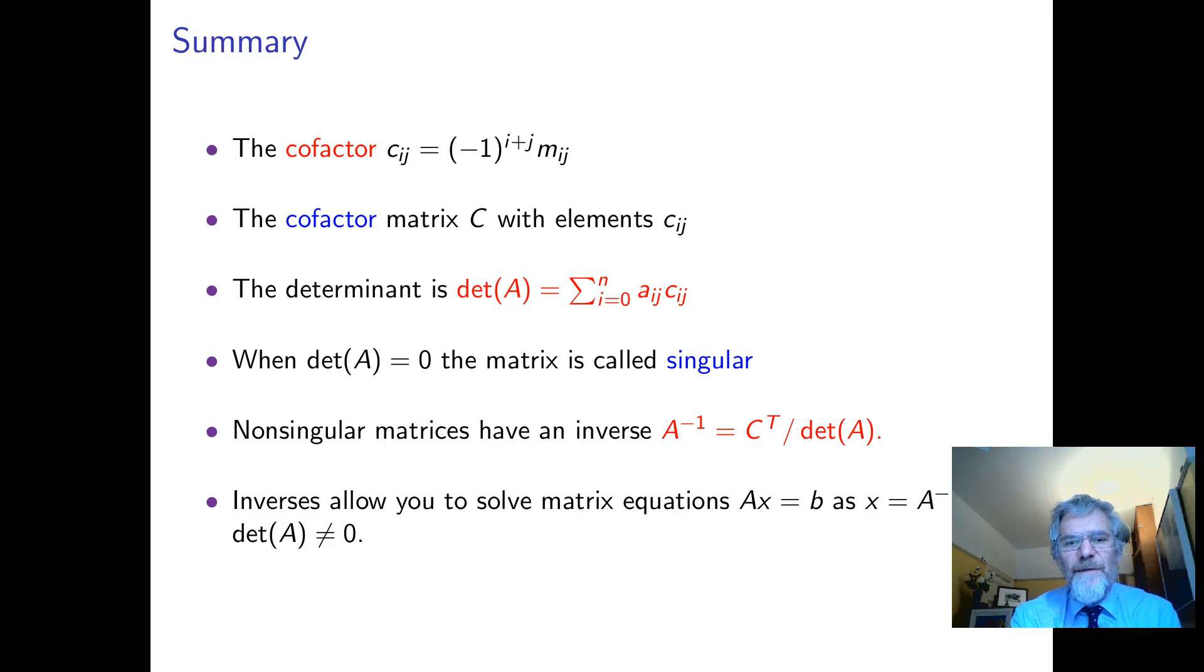We get a determinant by summing along any row or any column, the elements of that row and column times the cofactors that you formed from deleting them. If determinant is 0 the matrix is singular and then you can't invert it, it has no inverse.